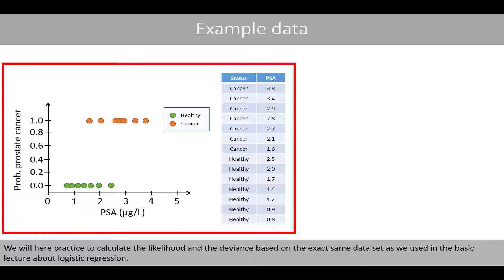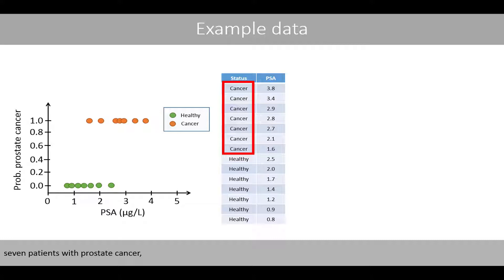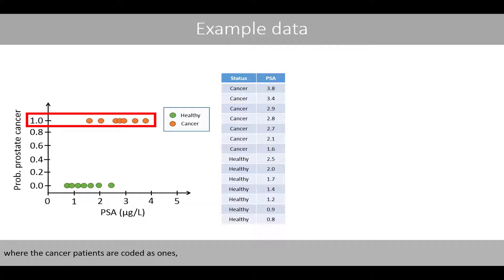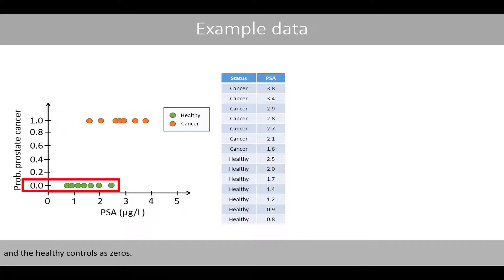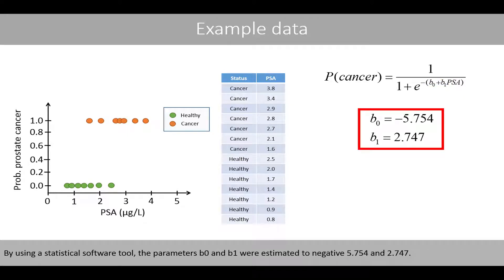We will practice calculating the likelihood and the deviance based on the exact same dataset used in the basic lecture about logistic regression. This dataset consists of prostate-specific antigen concentrations in blood from 7 patients with prostate cancer and 7 healthy controls. We can plot the data, coding cancer patients as 1s and healthy controls as 0s, then estimate the parameters B0 and B1. Using statistical software, B0 and B1 were estimated to negative 5.754 and 2.747.